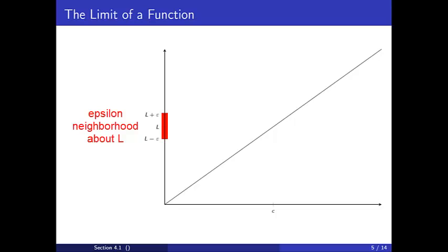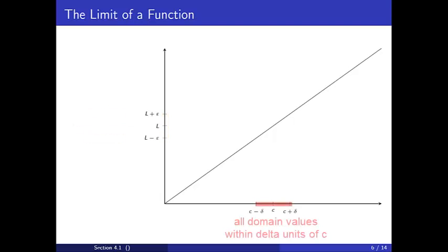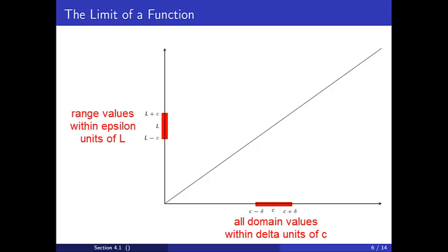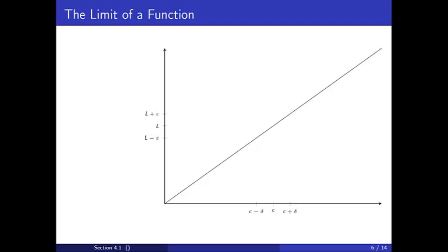When we choose a positive epsilon, this creates a neighborhood about L on the y-axis. Now, we must choose a delta so that all domain values within delta units of c correspond to range values within epsilon units of L. One choice of delta for this particular function is depicted on the graph. Graphically, it should be clear that every point in the interval c minus delta to c plus delta corresponds to a range value in the interval L minus epsilon to L plus epsilon.